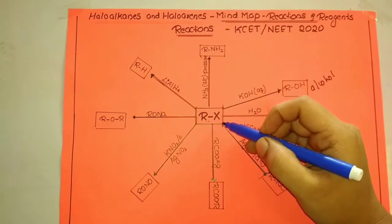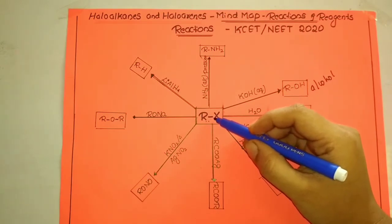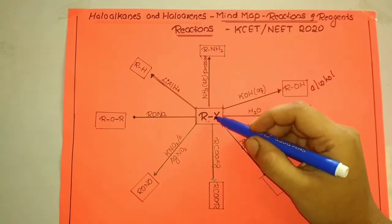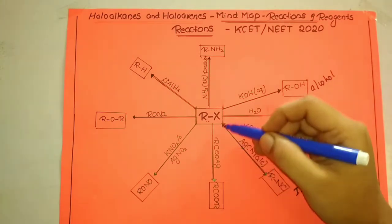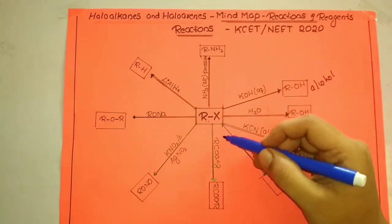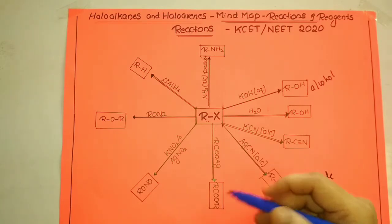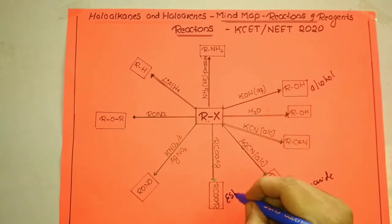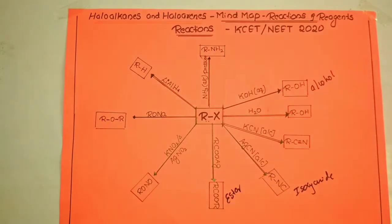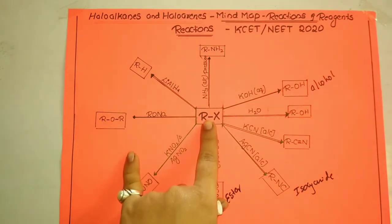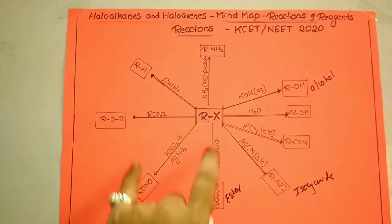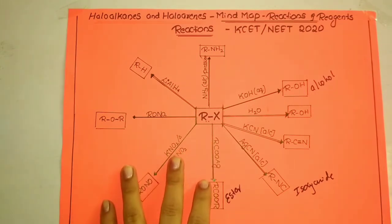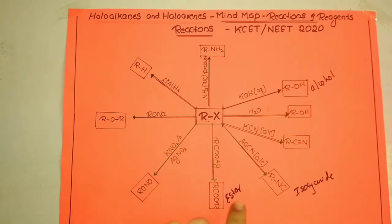When alkyl halide is treated with silver acetate, or more generally a silver carboxylate, it results in the formation of the respective ester. Silver acetate is a common example. This is an important reagent to remember.